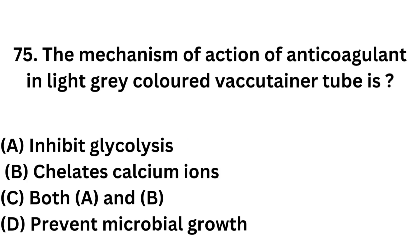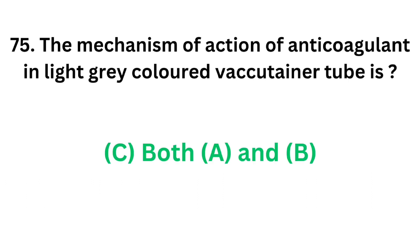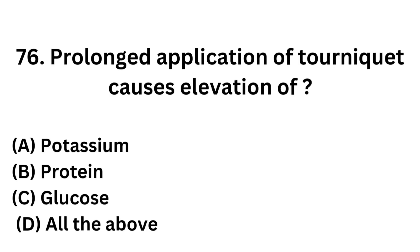Question number 75. The mechanism of action of anticoagulant in the light grey coloured vacutainer tube is: Option A: Inhibit glycolysis. Option B: Chelates calcium ions. Option C: Both A and B. Option D: Prevent microbial growth. The correct answer is Option C: Both A and B. The mechanism of action of anticoagulant in the light grey coloured vacutainer tube — that is, the sodium fluoride tube — is to inhibit glycolysis and chelate calcium ions.